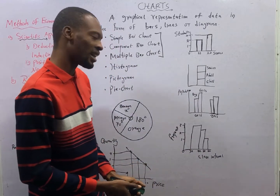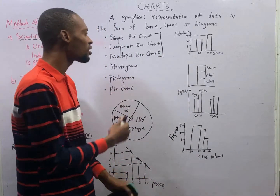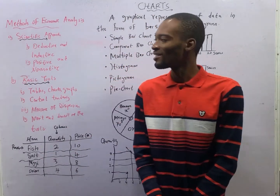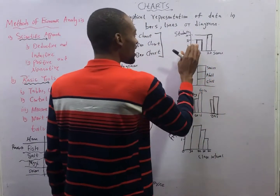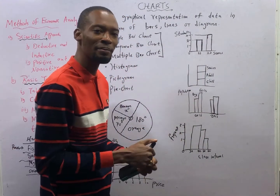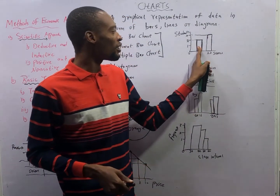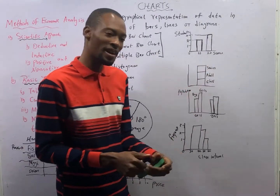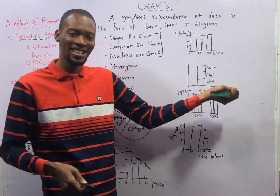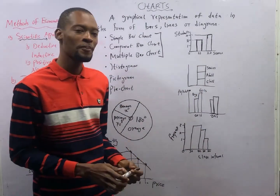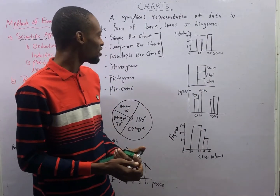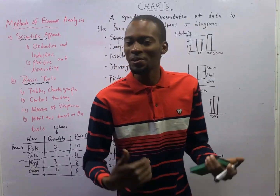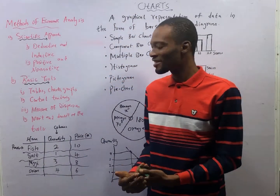Going on to charts, we have the pictogram. A pictogram is a pictorial representation in chart form. Instead of bars, if you are representing animals, you draw one animal here, draw one animal there. If you are representing birds, you draw birds; if you are representing rats, you draw rats. It is a pictorial form. Pictograms are usually used with kids to introduce them to statistics and charts.